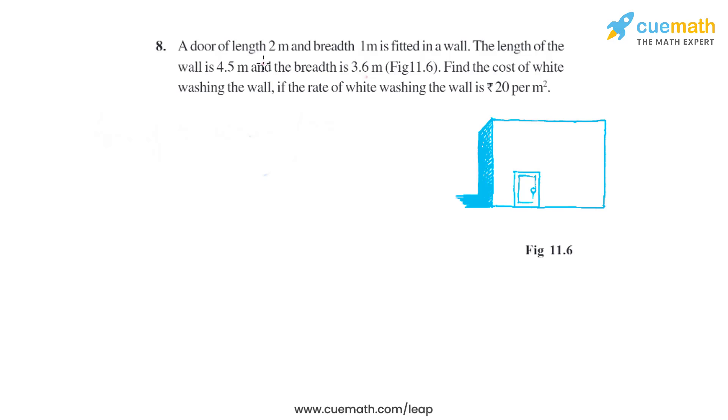Question 8 of this exercise says: A door of length 2 meters and breadth 1 meter is fitted in a wall. The length of the wall is 4.5 meters and breadth is 3.6 meters. Find the cost of whitewashing the wall if the rate of whitewashing is 20 rupees per square meter.